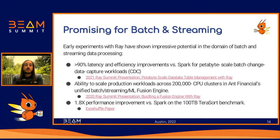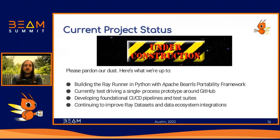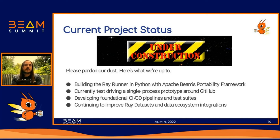Now that we've told you why we're building a new Beam runner and why we're using Ray to build it, you might be wondering when you can actually start using it. Like an old 90s GeoCities website, the Ray Beam Runner project is currently under construction, but you can still peruse at your leisure. We're currently building our runner in Python on top of the portability framework and testing a single-process prototype to ensure functional correctness before doubling down on task distribution and optimization. We're also working on foundational CI/CD pipelines and test suites, and continuing to make necessary improvements to Ray Datasets and other relevant data-centric projects in the Ray ecosystem.